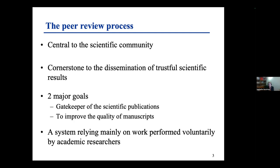I think we all agree that the peer review process is central to the scientific community. It's a cornerstone to the dissemination of scientific results. The peer review process has two major goals. First, it's a gatekeeper of scientific publications, trying to identify which publications shouldn't be in the public domain because they're not good enough, screening a minimum level of publication. The other goal is, of course, to improve the quality of manuscripts. The focus of my talk will be mainly on the role of the peer review process to improve the quality of the manuscripts that are finally published.